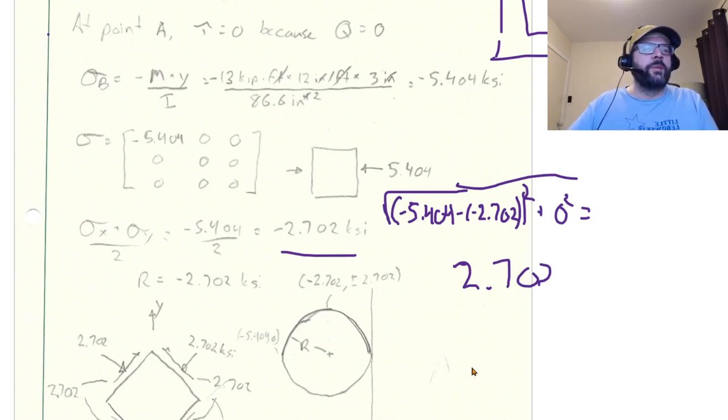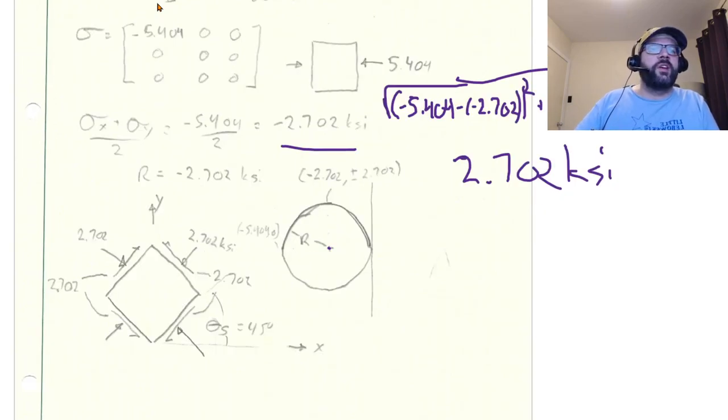Pretty simple to tell when all we've got is one stress. So that's our radius which means that the stress state for our maximum shear is at a situation when we have the normal stresses is negative 2.702 and our shear stresses is also 2.702 and that is going to be at 45 degrees from an element that's rotated to 45 degrees from the prime axis or from the previously defined coordinate system.